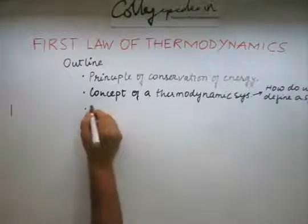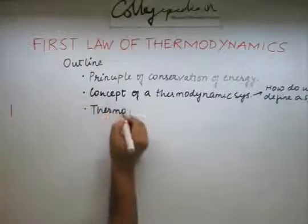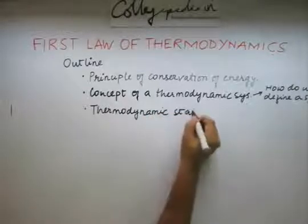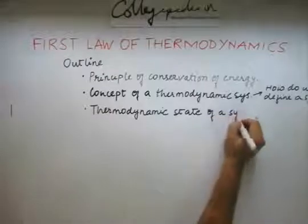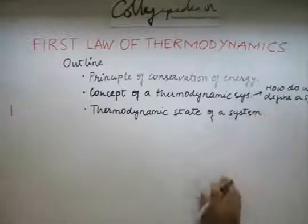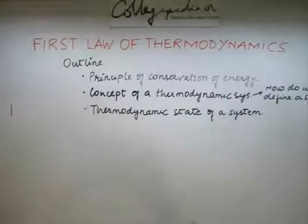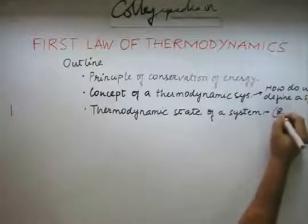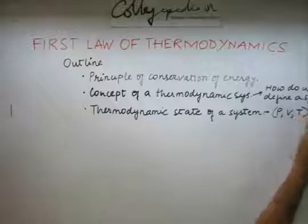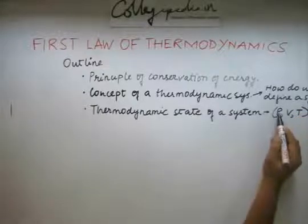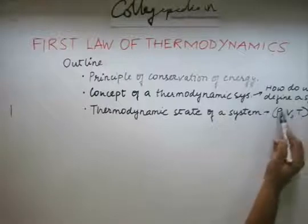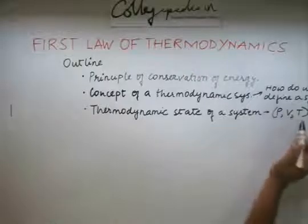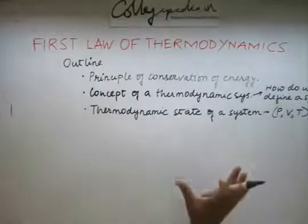Next, we will be looking at something called the thermodynamic state of the system. By thermodynamic state of a system, we need to specify some parameters by which we can identify at what state or what condition our system is in. In our discussion, a state can be easily defined as this: This is the instantaneous pressure or the pressure at which our system is, this is the volume of our system, and this is the temperature at which our system is in the present state. These three parameters define the thermodynamic state of a system.